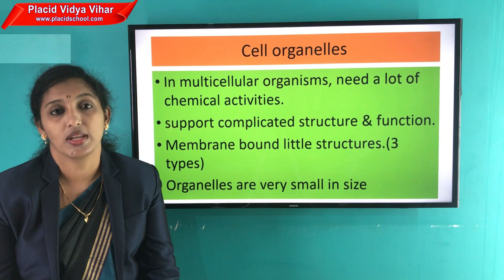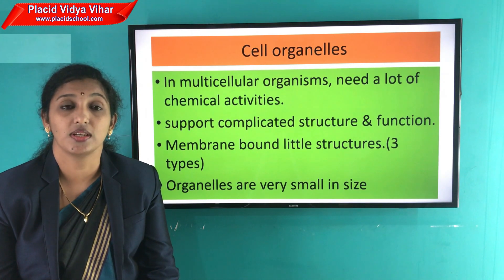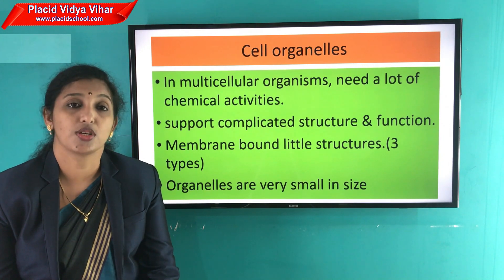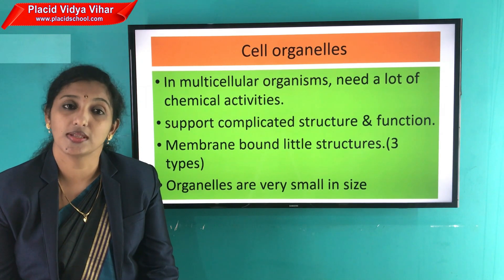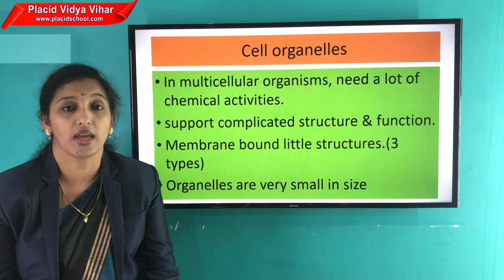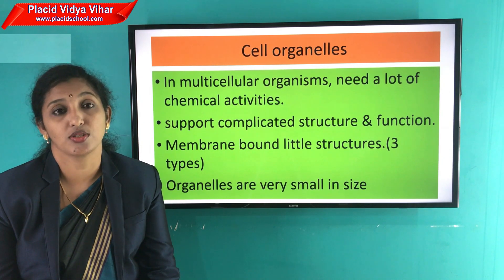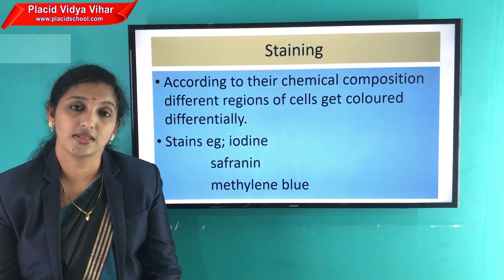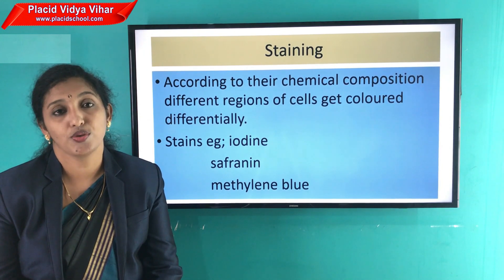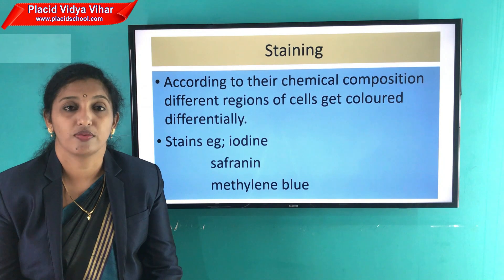Some of these organelles can be seen only through an electron microscope. In a previous practicum, we did a section of a leaf. When we observe that leaf tissue through the light microscope, we can see the cell membrane, cytoplasm, and nucleus. But the detailed structure of the nucleus can be seen only with the help of an electron microscope. To see the cell clearly, we should follow the staining process.